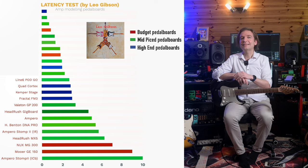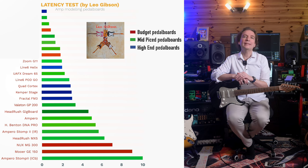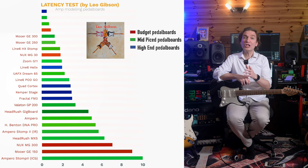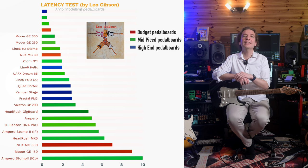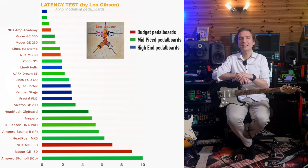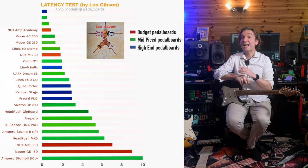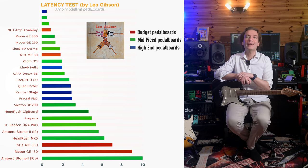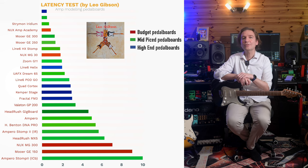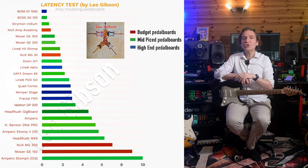At 3 milliseconds we also have the Pod Go, then at 2.3 milliseconds the Universal Audio Dream 65, then the Helix LT and Zoom G11 both at 2.1 milliseconds, the new XMG30 at 2 milliseconds, the Mooer G250 and G300 at around 1.8 milliseconds, and then at 1.1 milliseconds the new X Amp Academy — which is pretty surprising considering the price. We are now approaching the top three: in position number three we have the Strymon Iridium at 1.1 milliseconds.